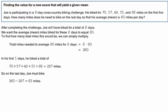Here's another example. We've got six day cross country bike challenge. So we're going to ride our bike for six days. Here's what he's biked for five of the days. How many miles does he have to go in the last day in order to average or get a mean of 60? Well, if it's six days and he wants to average 60 miles per day, then he's got to ride a total of 360 miles, right? That's how we get this.